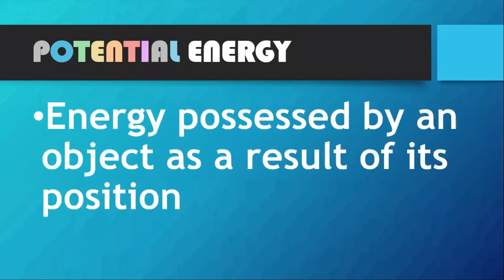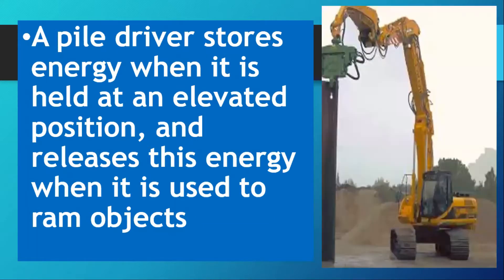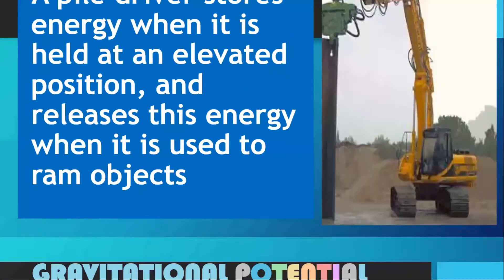Potential energy is the energy possessed by an object as a result of its position — it is stored energy. For example, a pile driver stores energy when held at an elevated position and releases its energy when used to ram an object. Similarly, the heavy ball of a demolition machine stores energy when held at an elevated position. This stored energy of position is referred to as potential energy.